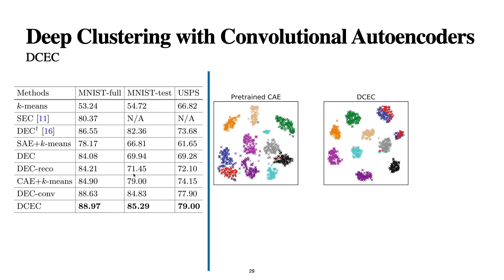Here are the results comparing several methods: DEC is Deep Embedded Clustering, SEC is Spectral Embedded Clustering, SAE is Stacked Autoencoder, and CAE is Convolutional Autoencoder. Their model provides better results compared to others across different datasets. If we plot it in 2D, we can see the clusters are well-separated from each other. There is still about 12% error, but it is better than the others and the clusters are well separated.